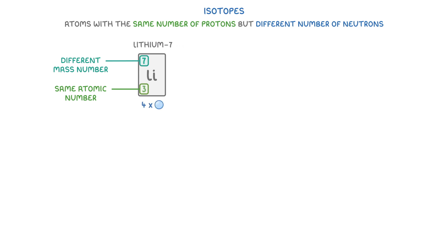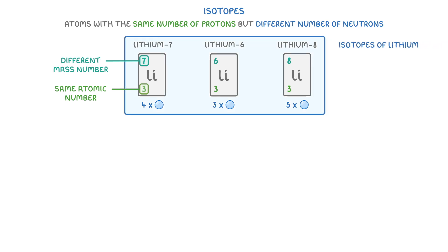For example, as well as lithium-7, which we've been looking at so far, we can also get lithium-6, which has 3 neutrons, and lithium-8, which has 5. So these 3 would all be classed as isotopes of lithium, because they all have the same number of protons, but different numbers of neutrons.